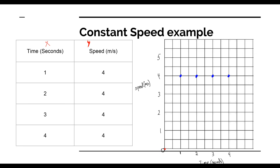All I did was go from the starting point: over 1, up 4; over 2, up 4; over 3, up 4; over 4, up 4. Then I connect these dots and extend the line. We have a flat line, which is exactly what we predicted — speed of 4, 4, 4, 4 means constant speed equals a flat line. A lot of people think back to distance versus time graphs and think a flat line means we're not moving, but remember — we have speed on this axis, so a flat line means we're moving at a constant 4 meters per second.